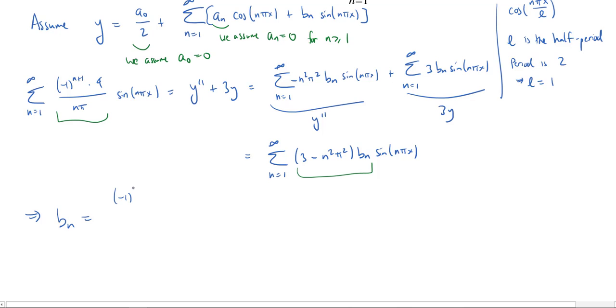So, bₙ will be the alternator times 4 over nπ times (3 - n²π²). And from that, we can conclude that y is equal to the sum from one to infinity of the alternator times 4 over nπ(3 - n²π²) sine of nπx.